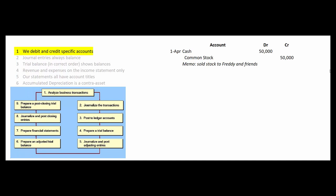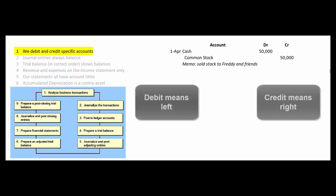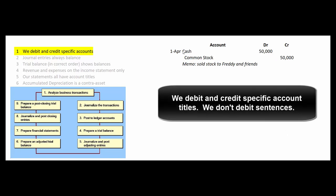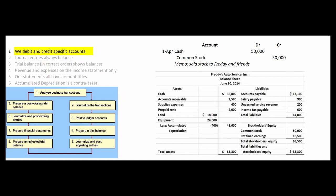When a transaction occurs that can be reliably measured in dollars, we record it with journal entries. We debit and credit specific accounts — debit means left, credit means right. For example, the company sold stock to Freddie and his friends; they got cash, so we debit cash and credit common stock. We do not write 'cash from sale of stock' because there is no account called that — there's just an account called cash. It's an asset; it goes up when we receive cash and goes down when we pay cash out. If we need to tell a story, we do that in the memo section.